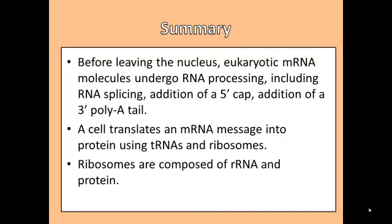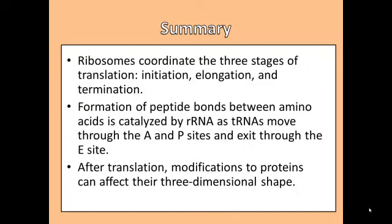A cell translates an mRNA message into a protein using tRNAs and ribosomes. Ribosomes are composed of rRNA and protein. Ribosomes coordinate the three stages of translation: initiation, elongation, and termination. Formation of peptide bonds between amino acids is catalyzed by rRNA as tRNAs move through the A and P sites and exit through the E site.